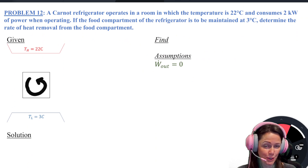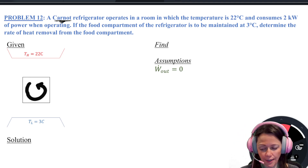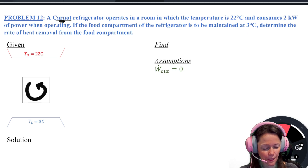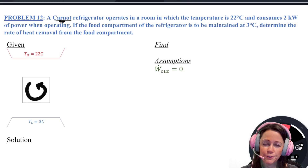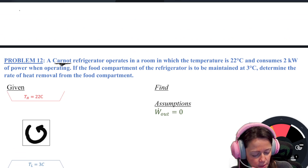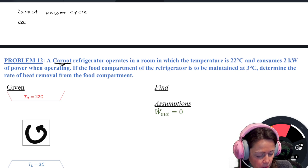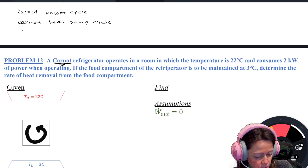Let's go to problem 12. The word Carnot — if you're reading your book, chapter 5 is a very long chapter with a lot of theoretical concepts thrown around about reversible and irreversible. Carnot is another one of those words. A Carnot cycle — oftentimes referred to as a Carnot power cycle — but we can also talk about Carnot heat pump cycles or a refrigeration cycle.